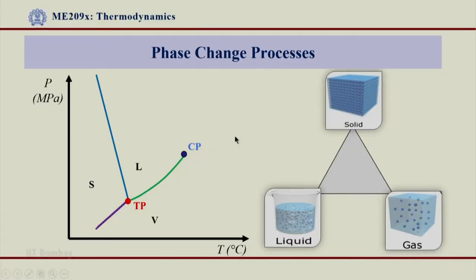Welcome back. After having understood the P-T diagram where the phase transition lines are given and where the phase transition can be understood, let us now see the phase change processes that take place when you have a phase transition from solid to liquid and liquid to vapor. Here you can see I have plotted a P-T diagram with the crooked Y as I referred to earlier. Also on the right side I showed a triangle and I have just placed solid, liquid and gas phases on the three vertices of this triangle.